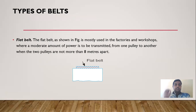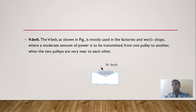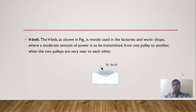Regarding types of belts: the first is the flat belt, whose surface is flat. It is mostly used in workshops where power is transmitted between two pulleys not more than 8 meters apart. The V-belt is mostly used in factories and workshops where a moderate amount of power is to be transmitted between two pulleys which are close to each other.